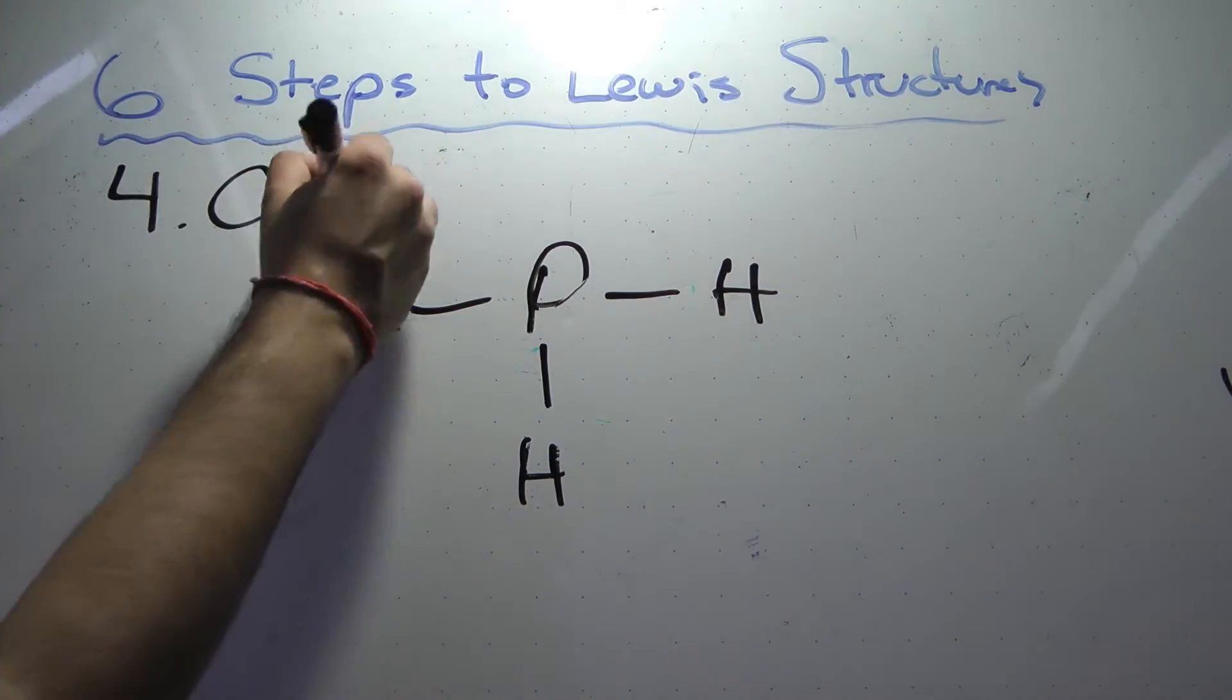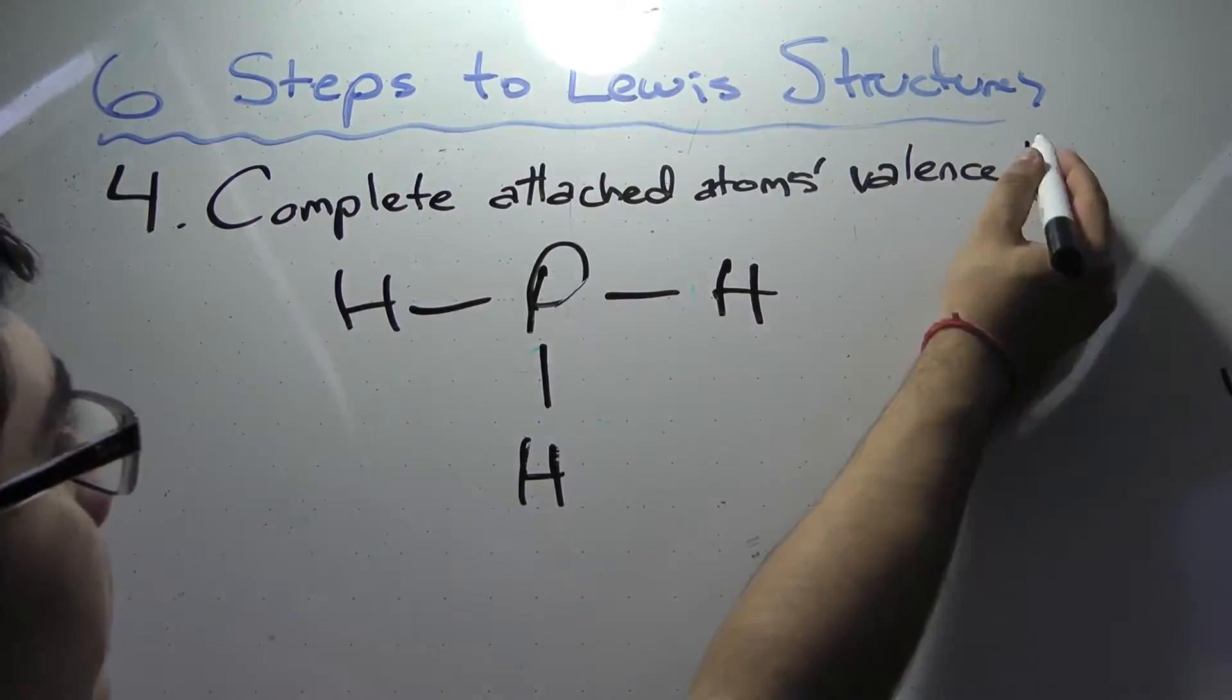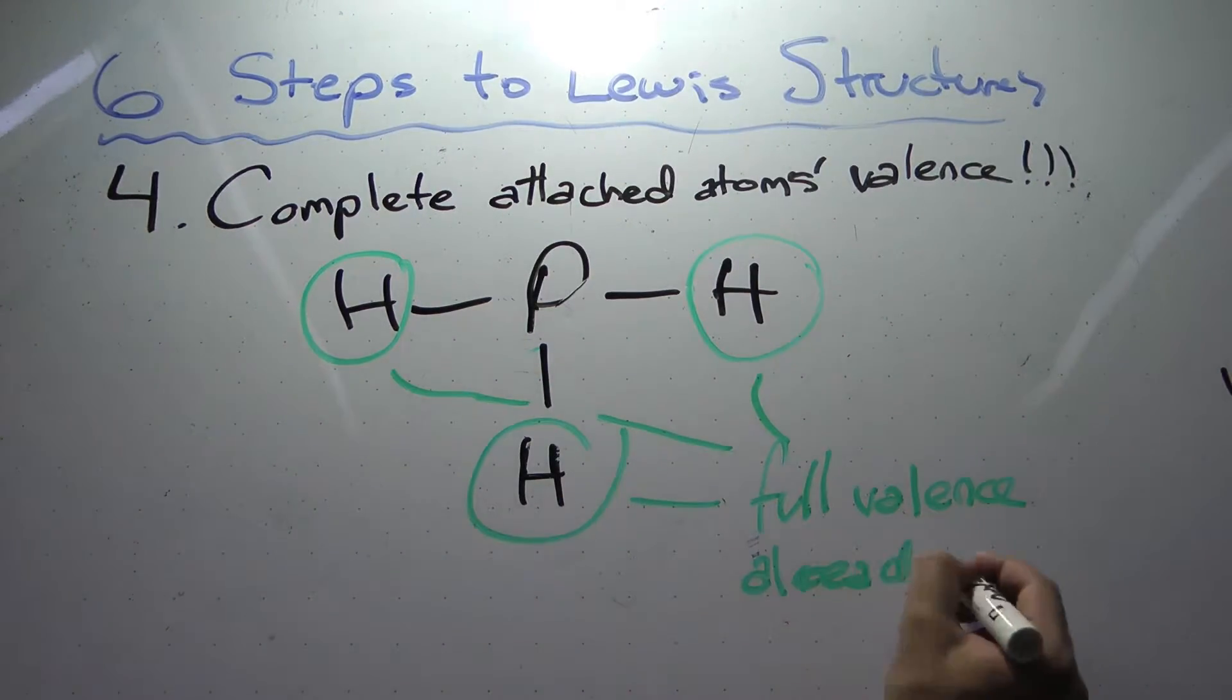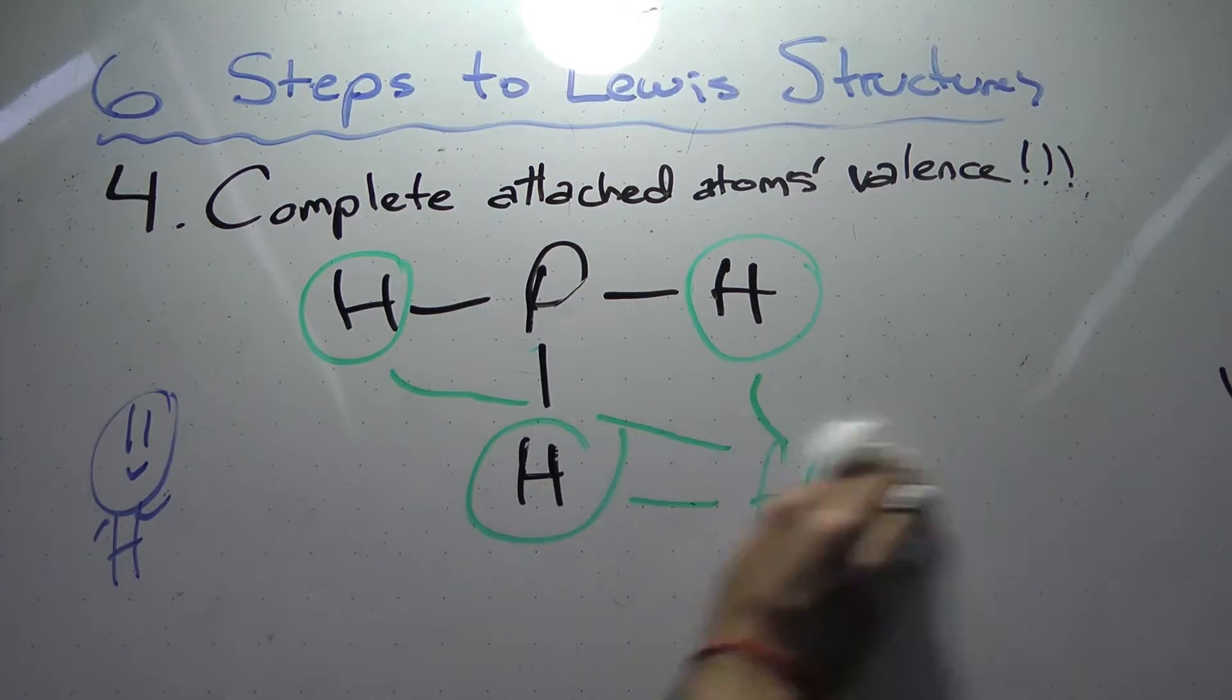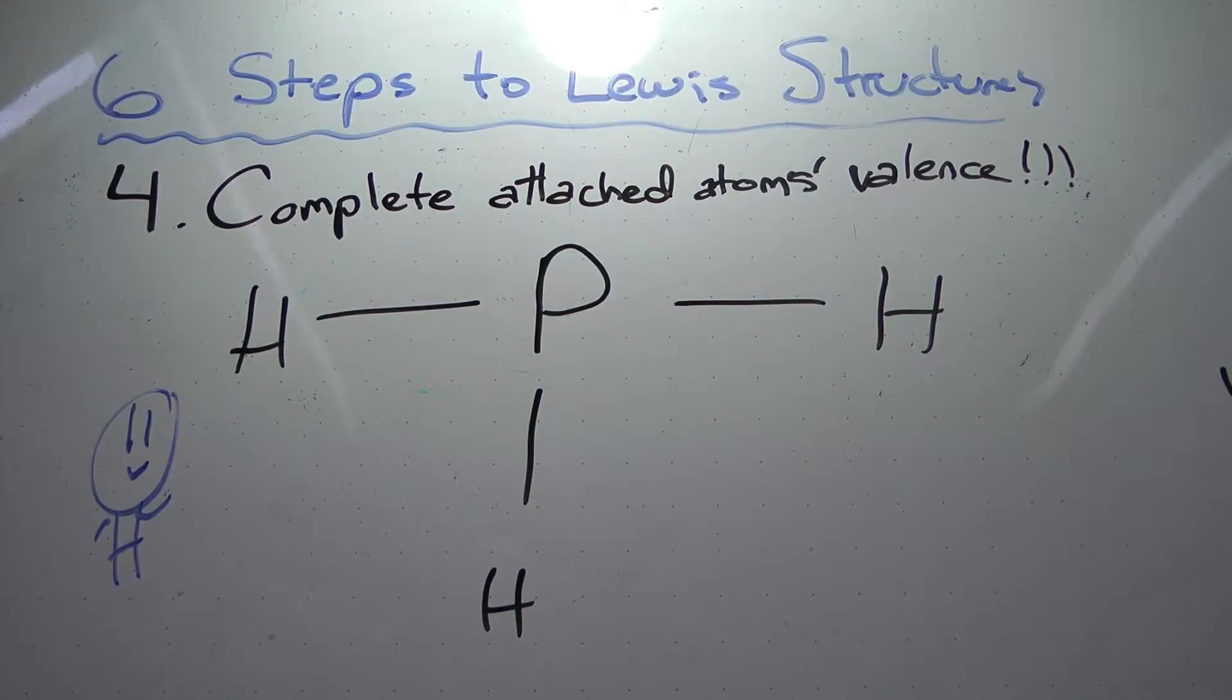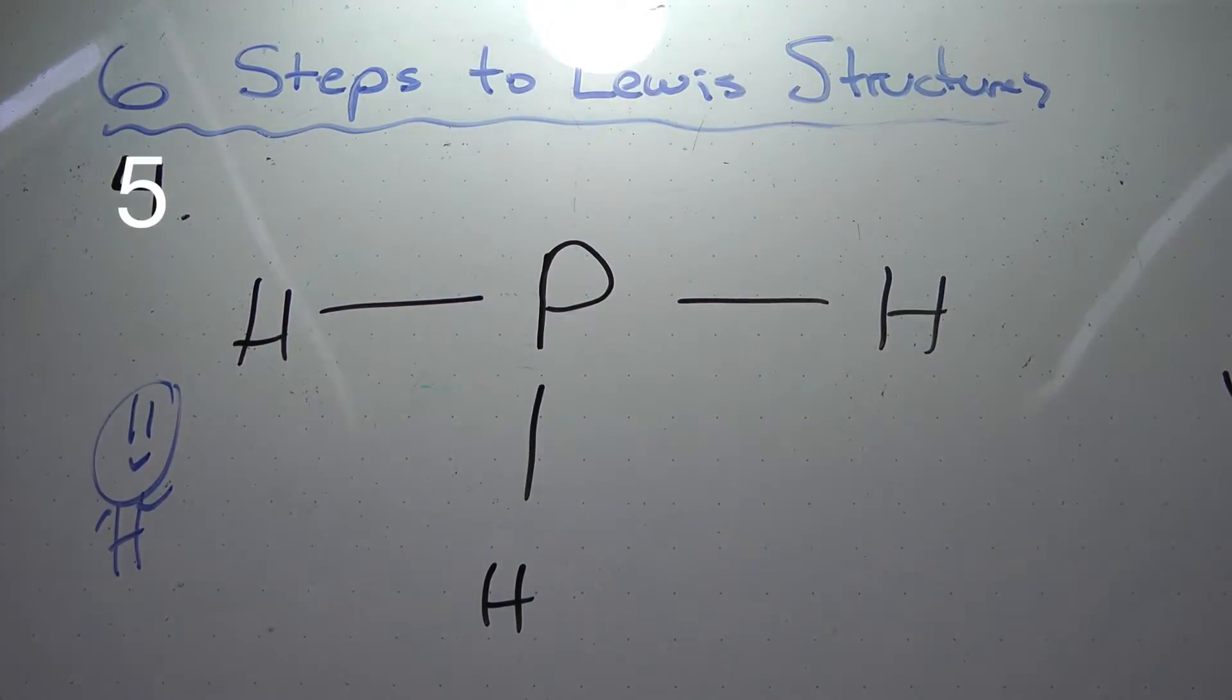Moving on to Step 4: Complete the octets of the atoms attached to the central atom by adding electrons in pairs. In PH3, we can see that the hydrogen has full octets. Thus, we do not need to add any more electrons around them.